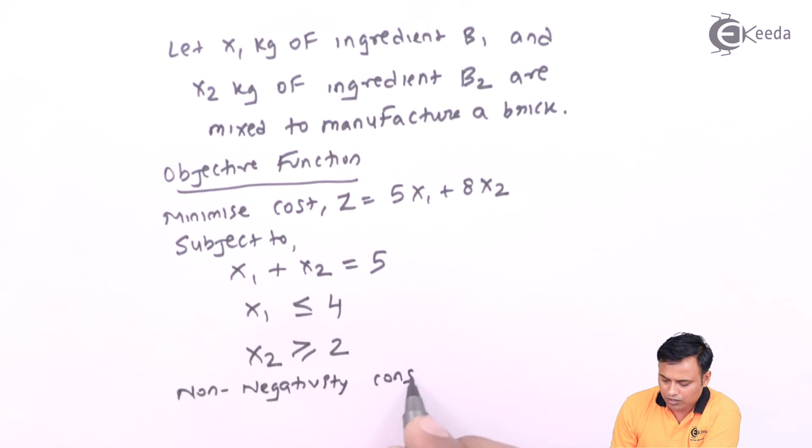At last I will note down my non-negativity constraints, which are x1 greater than or equal to 0, x2 greater than or equal to 0.